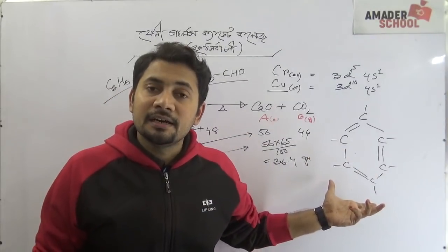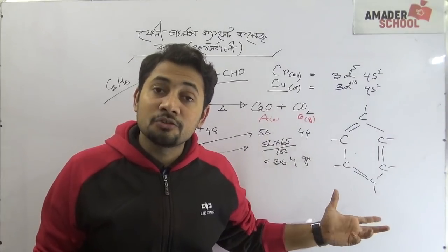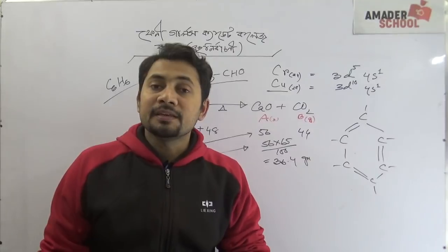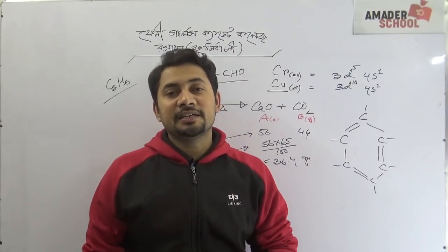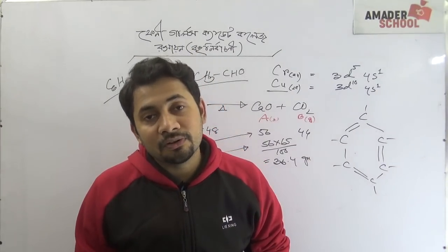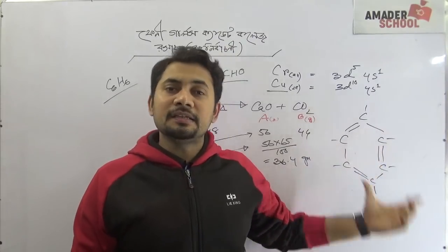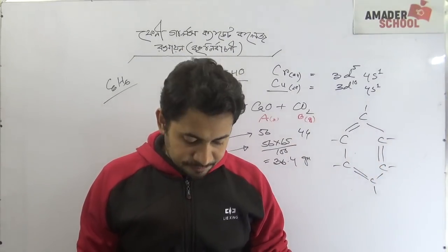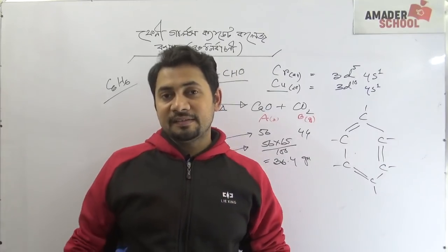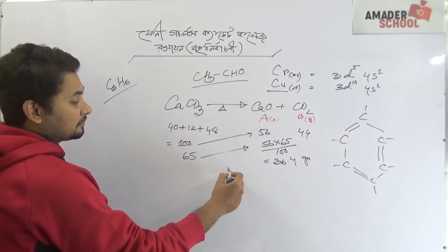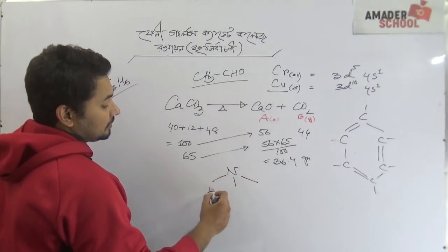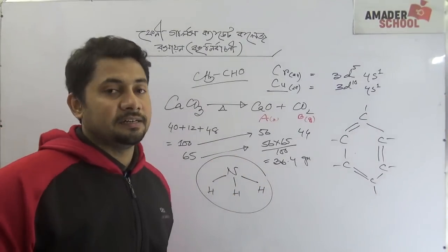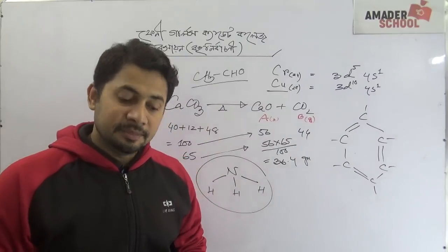Definitely, benzene is an aromatic compound. Benzene is an electrophile. There are three options: one, two, three. Ammonia is an accurate example. Ammonia has a pyramidal structure — this is a pyramid shape.